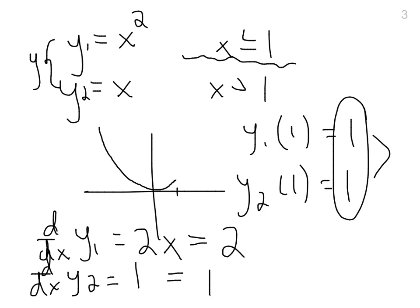That function, the first part of it, has a slope of 2, but then the next part of it only has a slope of 1, so it continues off kind of like that. You'll see that the points meet, but the slopes are not the same.